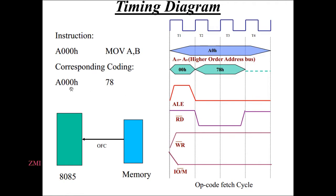There is also ALE — ALE means Address Latch Enable. The first cycle will have ALE active in T1. It means Address Latch Enable is active in the first cycle as a fast cycle.